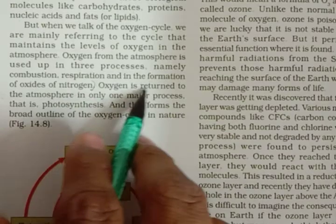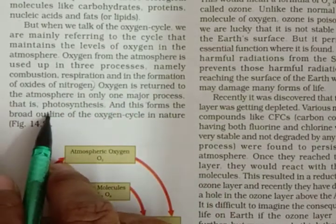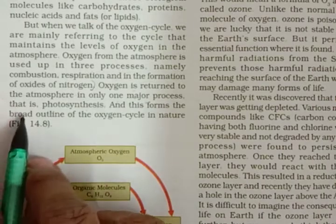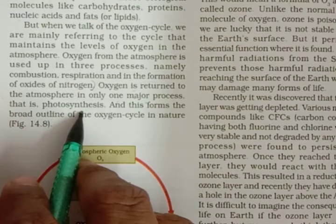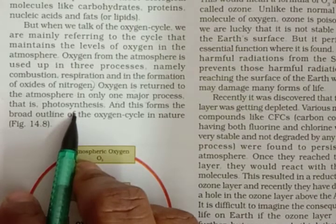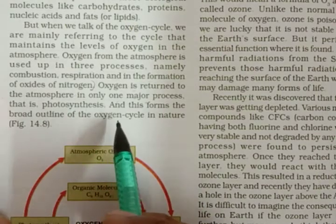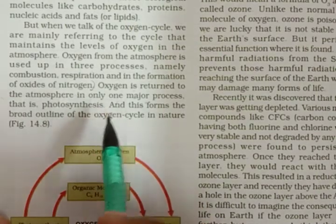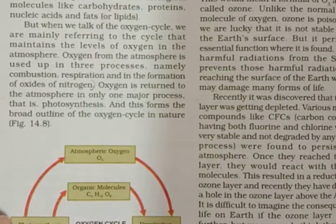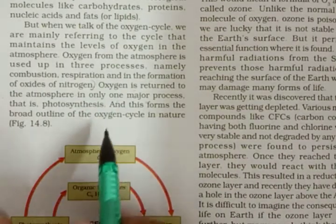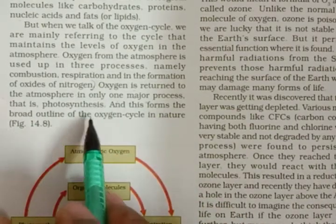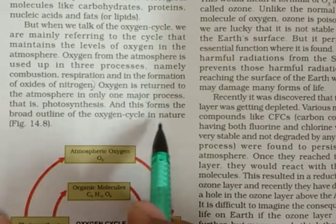Oxygen is returned to the atmosphere in only one major process — photosynthesis. Photosynthesis is done by plants: they take in carbon dioxide and give out oxygen. In only one way, the atmosphere gets oxygen back, and this forms the broad outline of the oxygen cycle in nature.